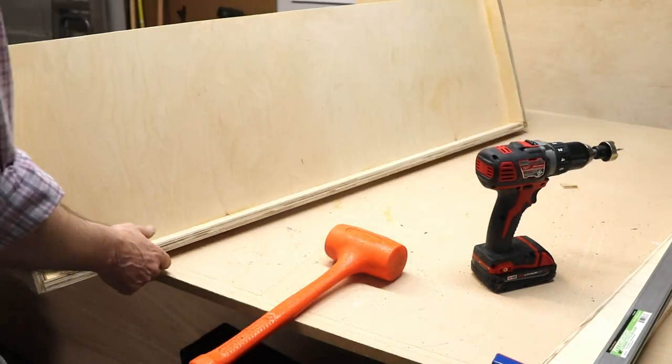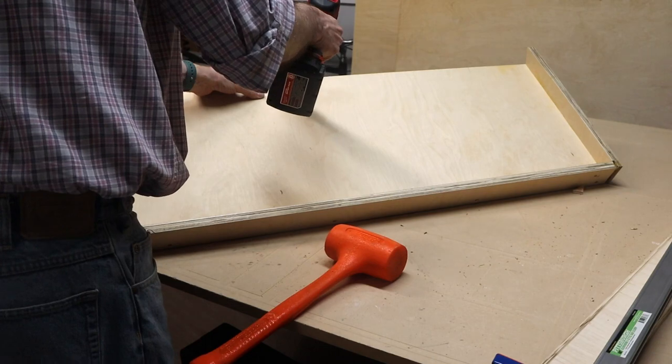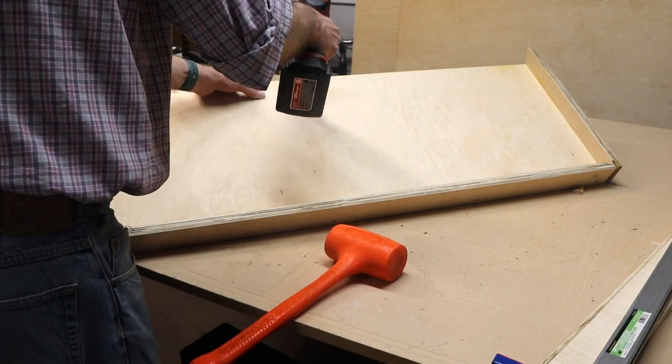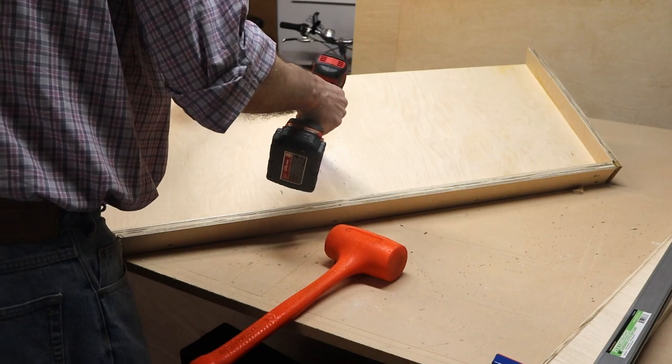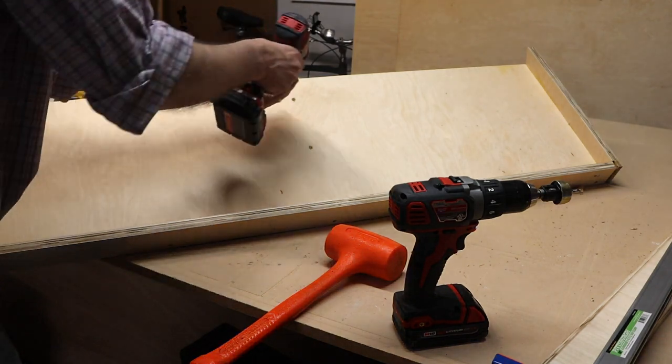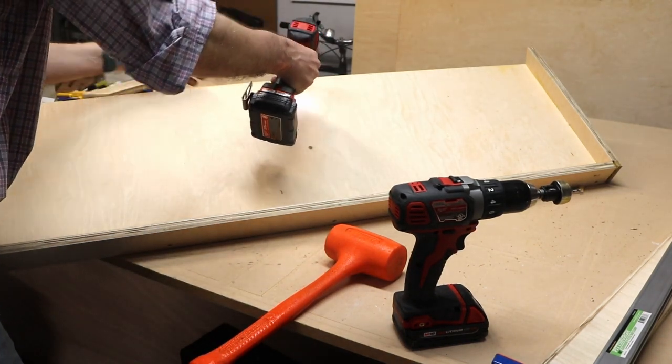While narrating this video I realized just how much I overengineered this shoe shelf. It's not going to be holding much weight because shoes are really light. I don't really need these screws on the top to hold it to the center support. The glue is going to be just fine for that, but I really went overkill on this one.